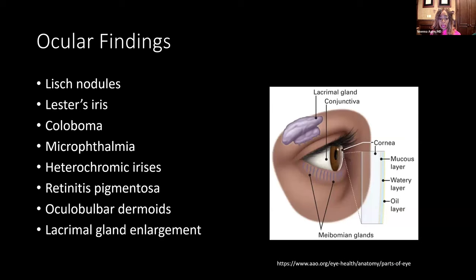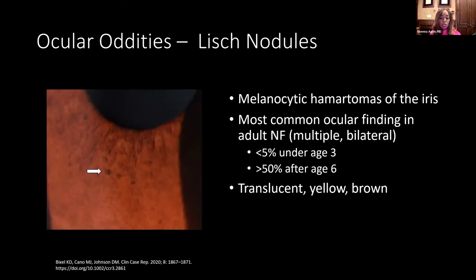Moving on to features we can see in the eye — most of these you can see while looking at the patient and can prompt you to examine other areas for diagnostic support. Lisch nodules are melanocytic hamartomas of the iris. Depending on iris color, they can range from translucent through yellow to brown or sometimes blue or gray. They are the most common ocular finding in adult neurofibromatosis patients — usually multiple and bilateral. Less than 5% of NF patients have them before age 3, but more than 50% after age 6.